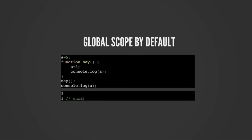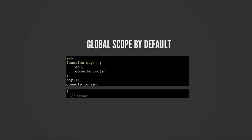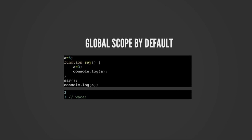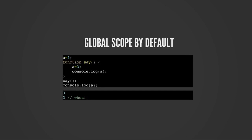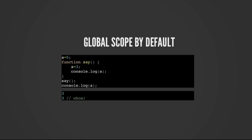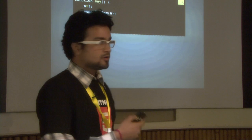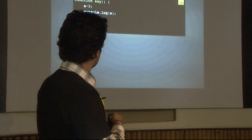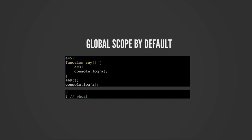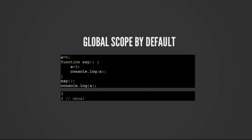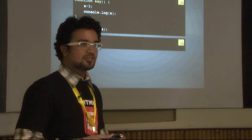First, the var keyword. In JavaScript, whenever I instantiate a variable — for example, I instantiated a variable `a` equals 5 in the global scope — and then I create a function where I again reinitialize the variable `a` as 3. Now when I see the value of the variable within the function, it's 3. But when I check the variable in the global scope, it has also changed to 3.